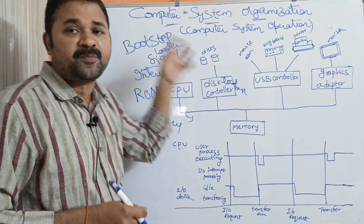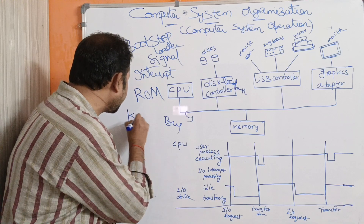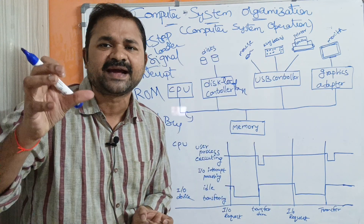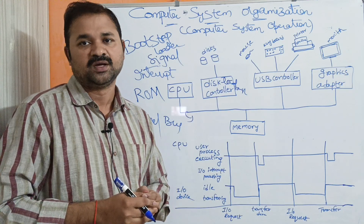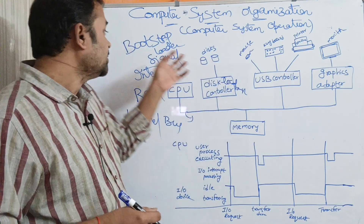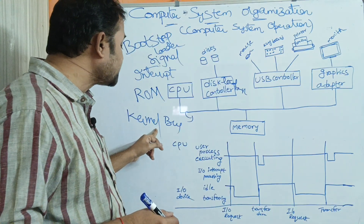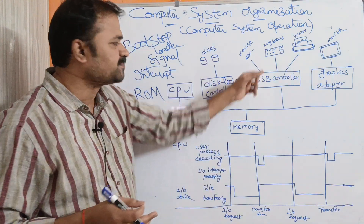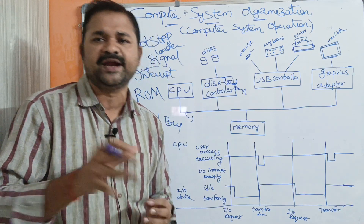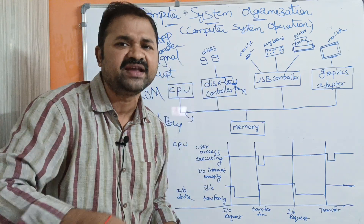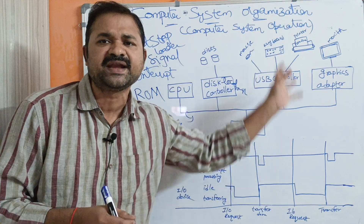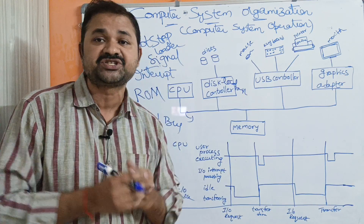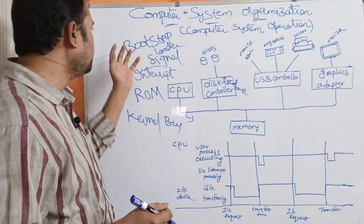Whenever we switch on the computer, the bootstrap loader program loads the operating system kernel into main memory. The kernel is nothing but the operating system, containing its important tasks. All device driver files will be loaded — for example, we can work with the keyboard only when its driver file is installed. CPU registers such as the program counter and instruction register will also be initialized.